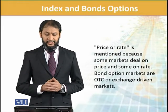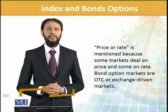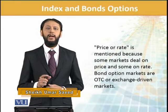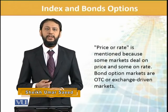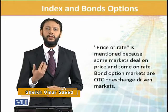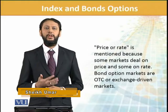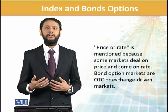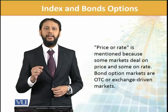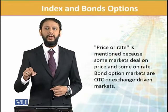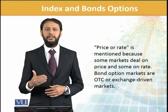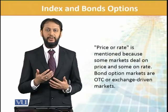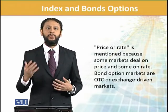Price or rate is mentioned because some markets deal on price and some on rates. For example, you can buy this bond at the rate or price of 12.25. This is an option at a rate; both prevail in the market, so that's why we say both terms are used.